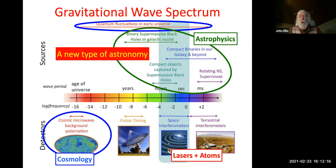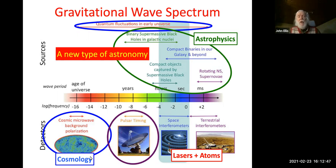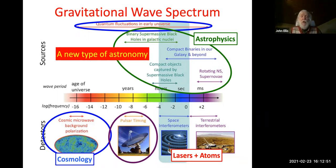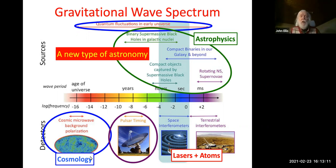What techniques do we have available to look for gravitational waves? The initial direct discovery was made using laser interferometers — LIGO and Virgo. Already planned are space versions of those laser interferometers. I'll also be discussing a program to explore gravitational waves using atom interferometers, which I'm personally involved in. There's also the possibility of detecting gravitational waves through their effects on pulsar timing, which I'll come back to at the end of the talk. Put together, there's a vast array of interesting astronomical and cosmological sources — a whole new type of astronomy has been opened up by the direct detection of gravitational waves.